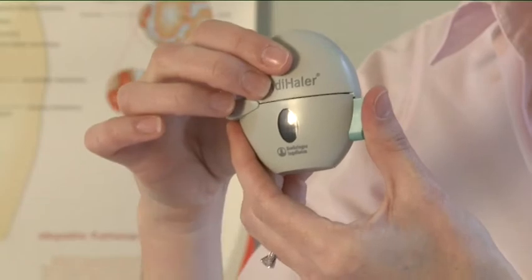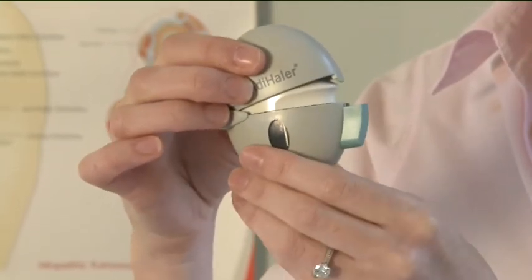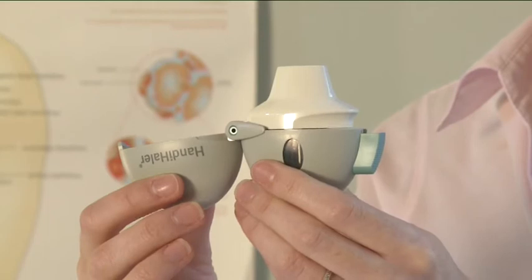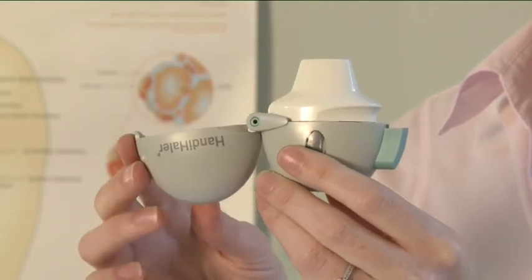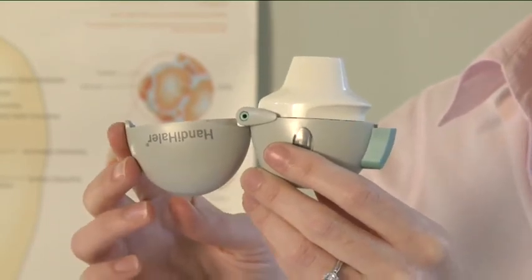To open the Handihaler, press the green piercing button on the side and this will release the dust cap. Open the dust cap completely by pulling it upwards, then open the white mouthpiece by pulling it upwards.